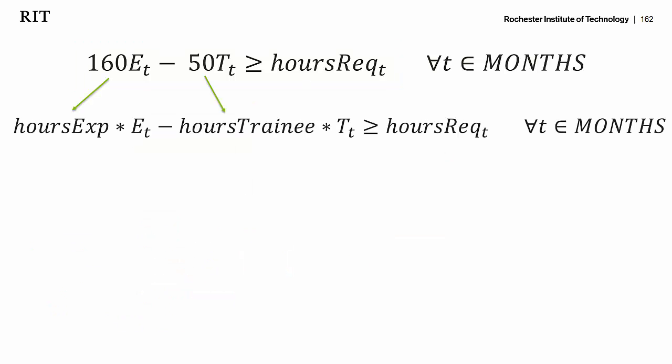And this constraint function will use the provided rule and one or more sets to make all the necessary constraints. For the remainder of these slides, we replaced the hard-coded parameters with actual soft parameters that we can change. So 160 — that parameter we called hours_exp — and 50 we called hours_trainee. We're going to use those parameters in these constraints as well.